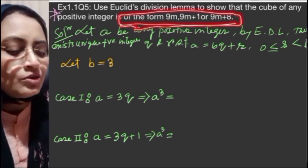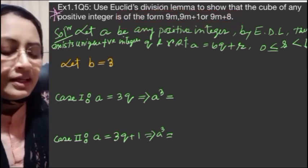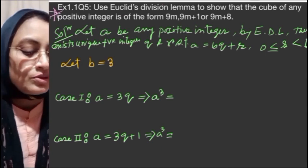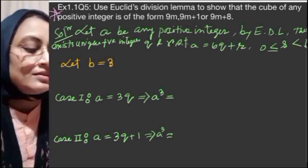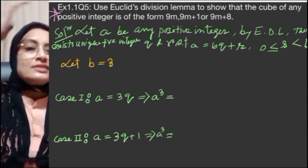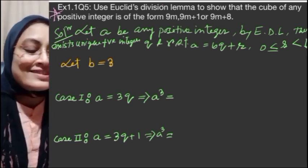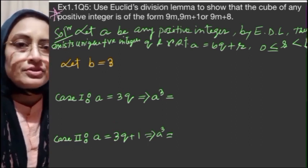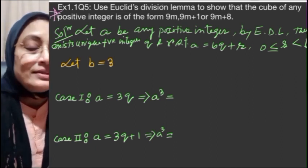Now let's write using Euclid's Division Lemma. Let a be any positive integer. By Euclid's Division Lemma, there exists unique integers q and r such that a is equal to bq plus r, where 0 less than or equal to r less than b.